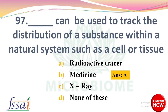The urea breath test commonly uses a dose of carbon-14 labeled urea to detect dash infection — options: E. coli, Streptococcus, Staphylococcus, Helicobacter pylori. The right answer: option D, Helicobacter pylori.